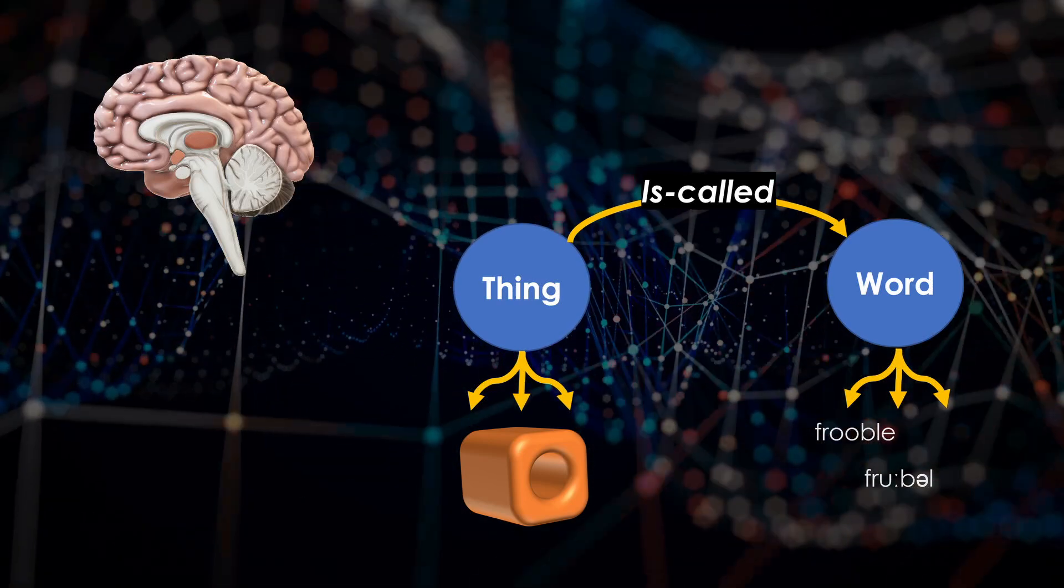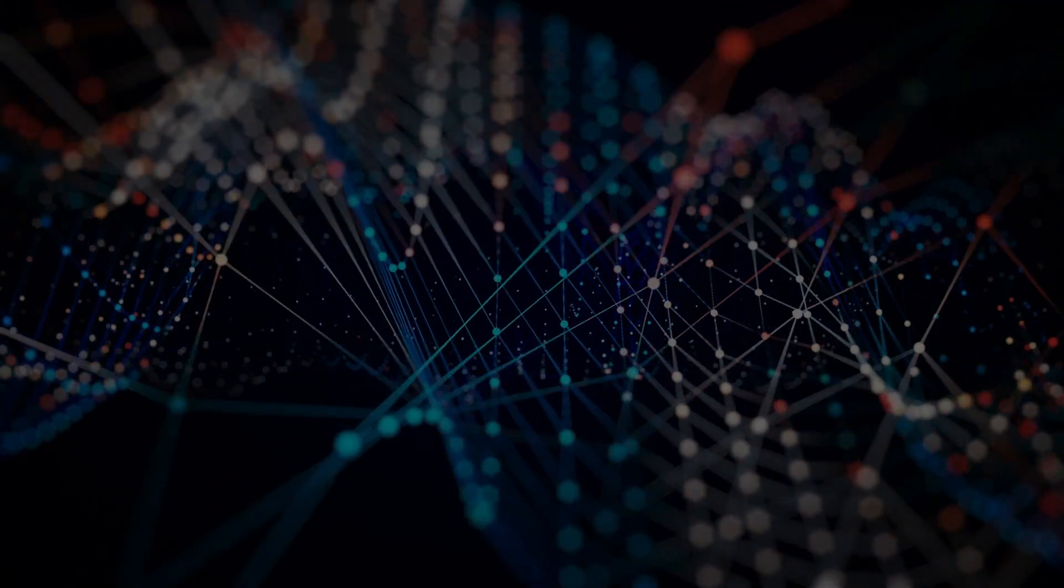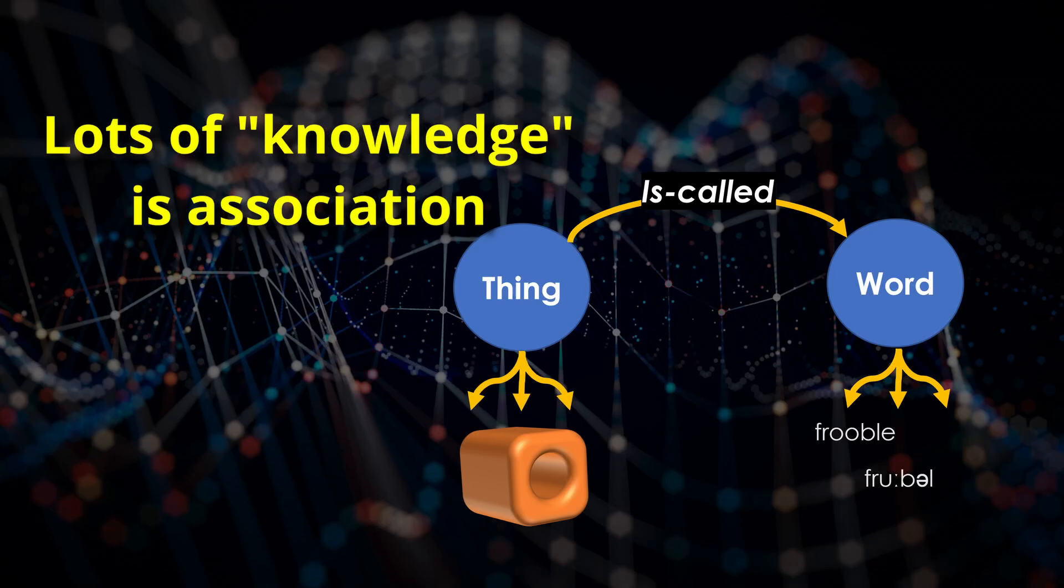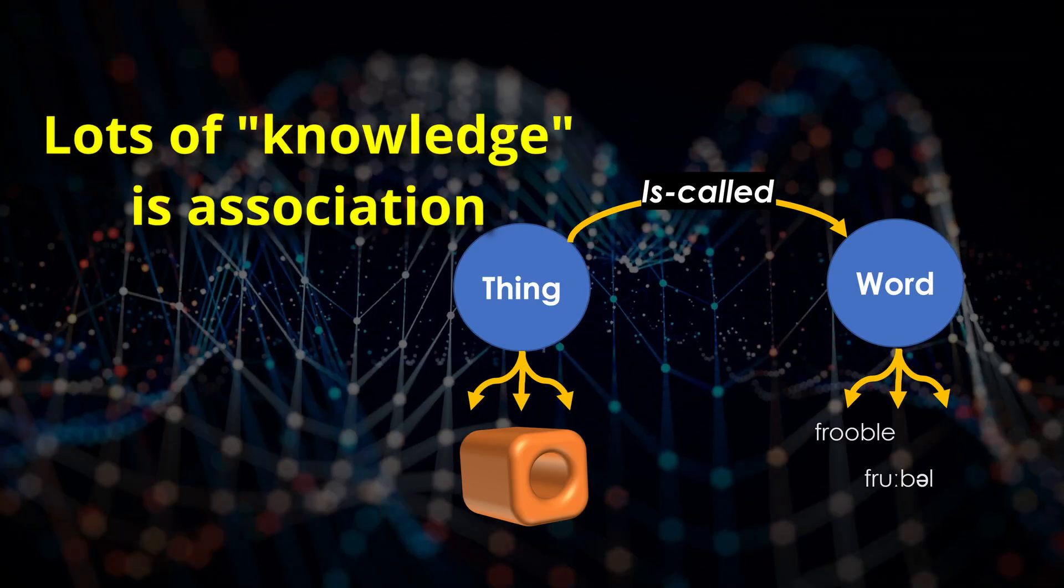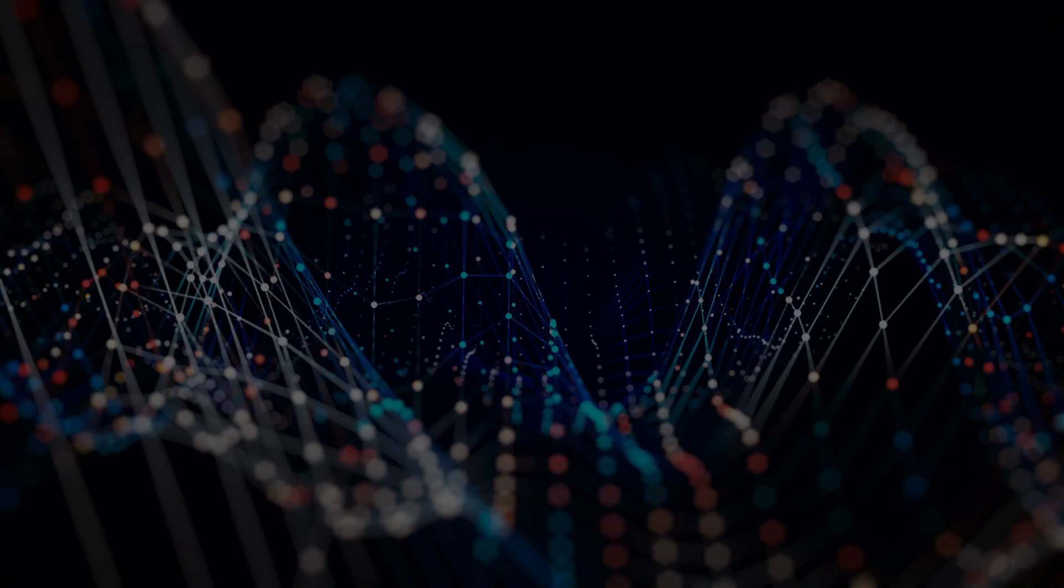I can ask you, what is this? And you can say, it's a frubal. Your brain has made a connection between the shape and what it's called. How your brain does this and how AI is different is what this video is about.